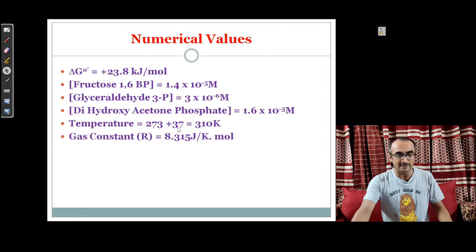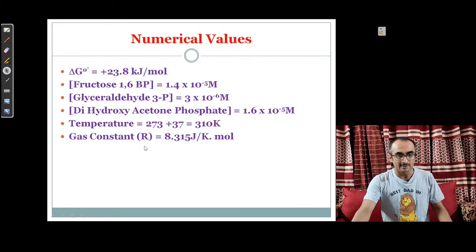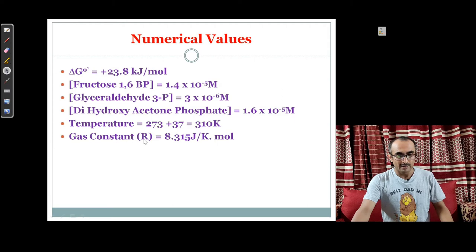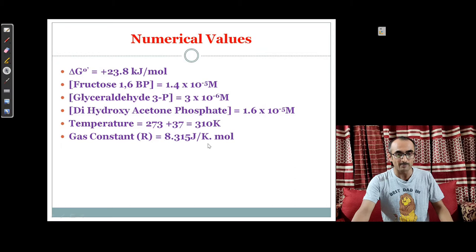Temperature is 37 degrees, which means in Kelvin it will be 273 + 37, equal to 310 Kelvin. The gas constant R has a value equal to 8.315 joules per Kelvin per mole.